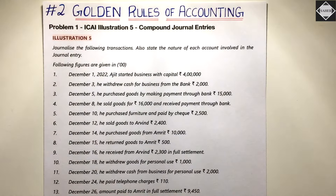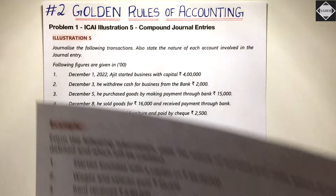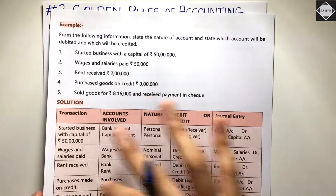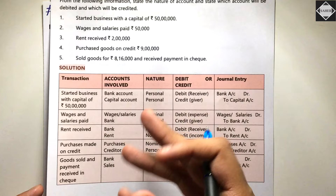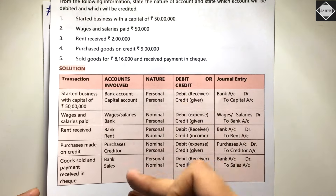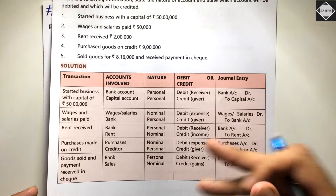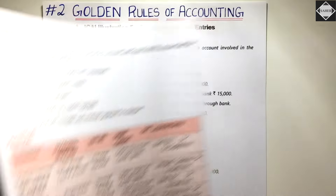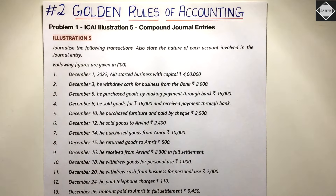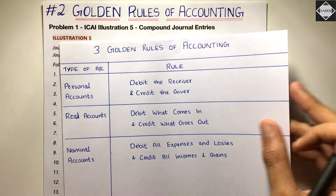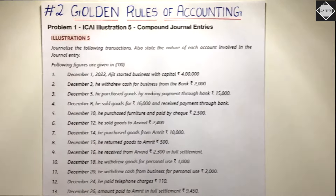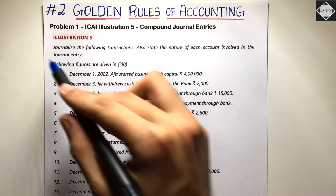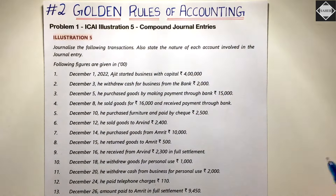We have taken an example from the CA Foundation study material in the previous video, where we saw how to identify which category transactions fall in, their nature, and how to use the rules to pass journal entries. If you haven't watched that video, please watch it first — then only you'll be able to understand everything in detail.